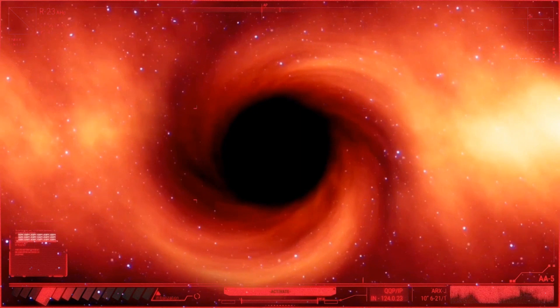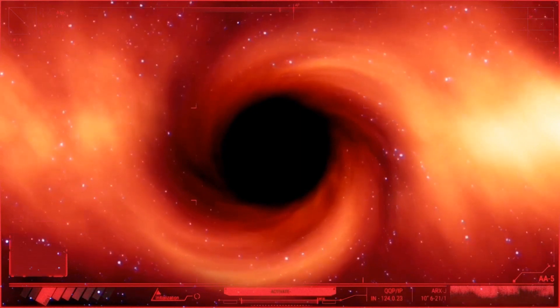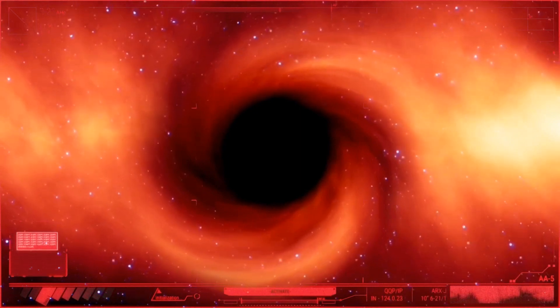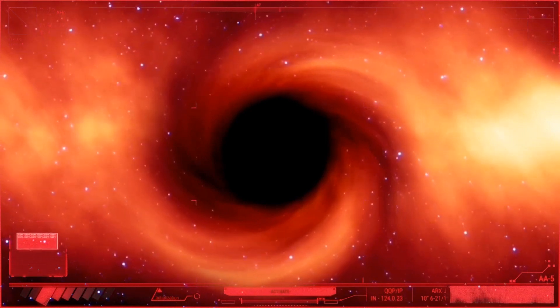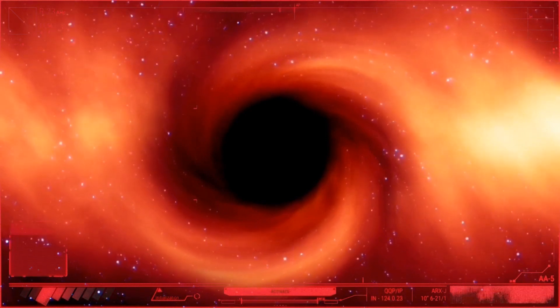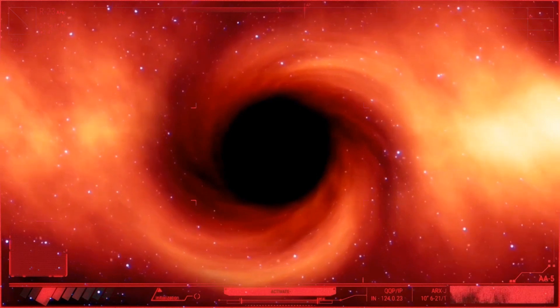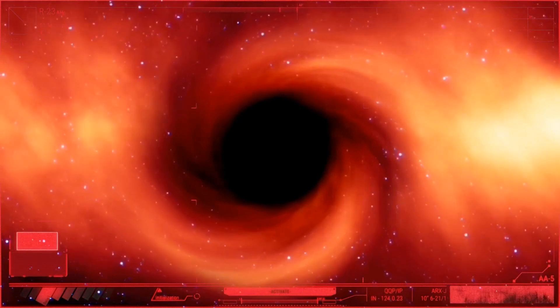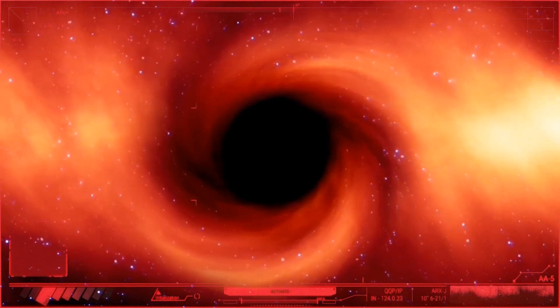Effects on surrounding objects. The gravitational pull of a black hole affects the motion of nearby objects, such as stars or gas clouds. By studying the motion and behavior of these objects, scientists can infer the presence and characteristics of a black hole.